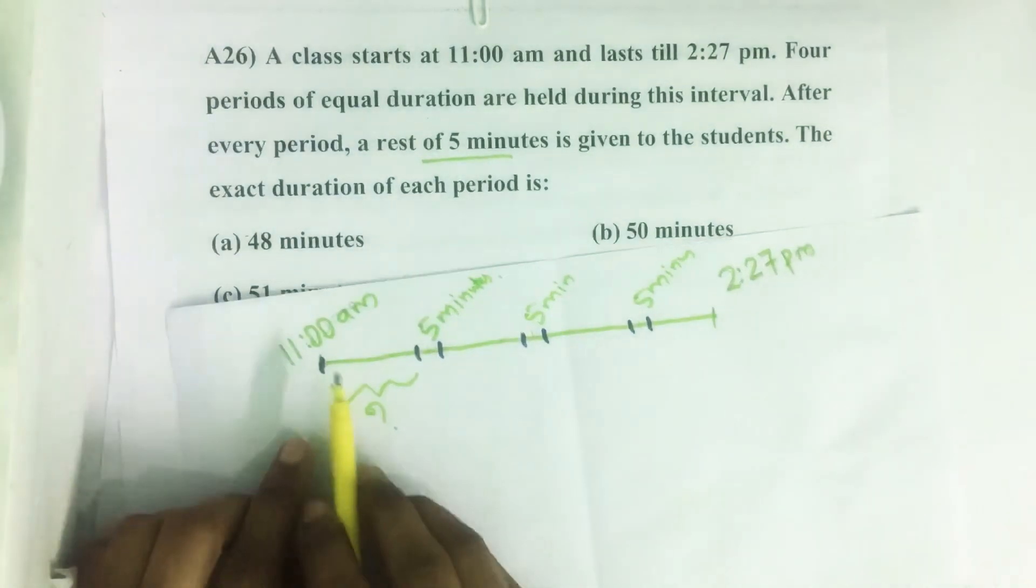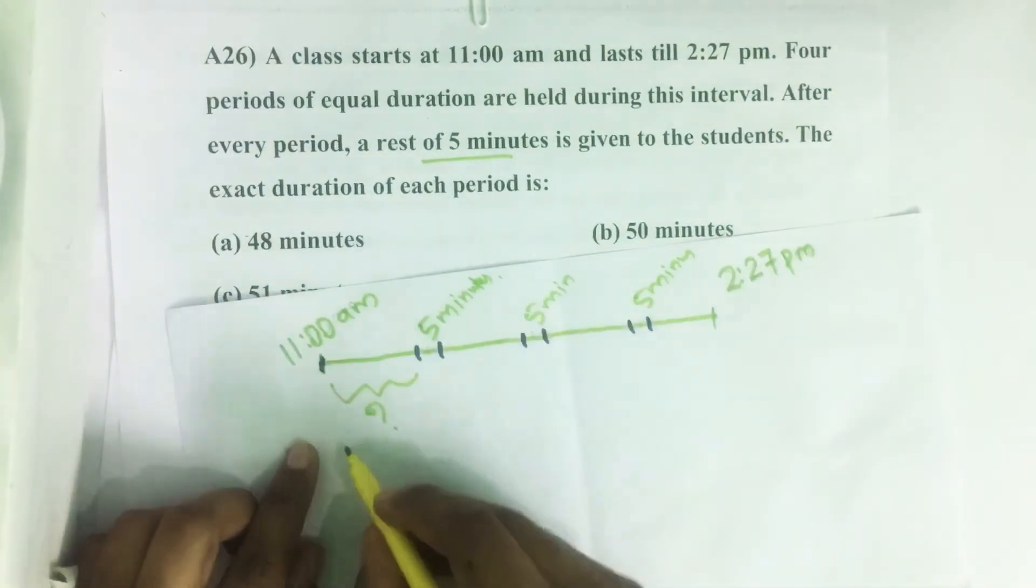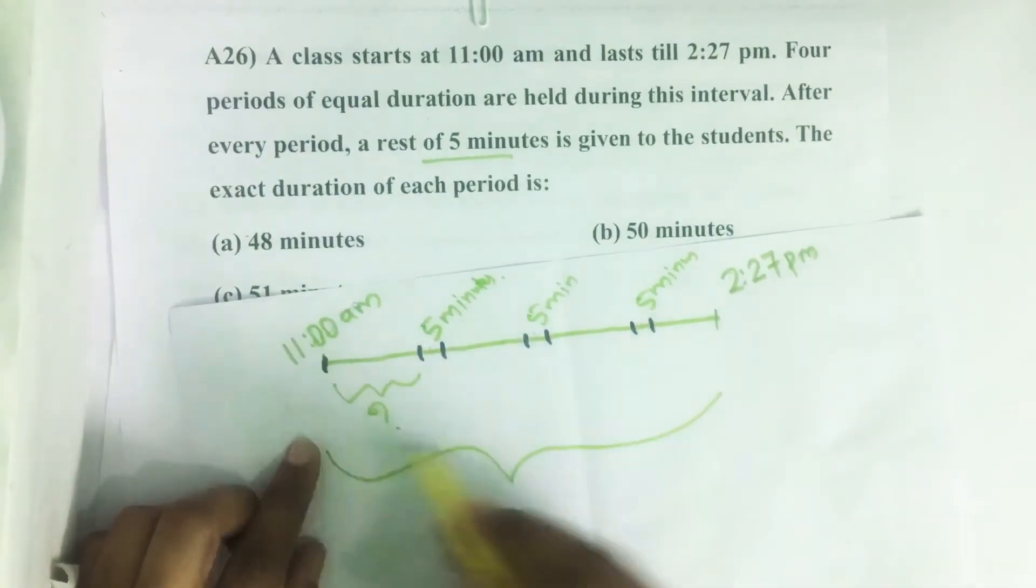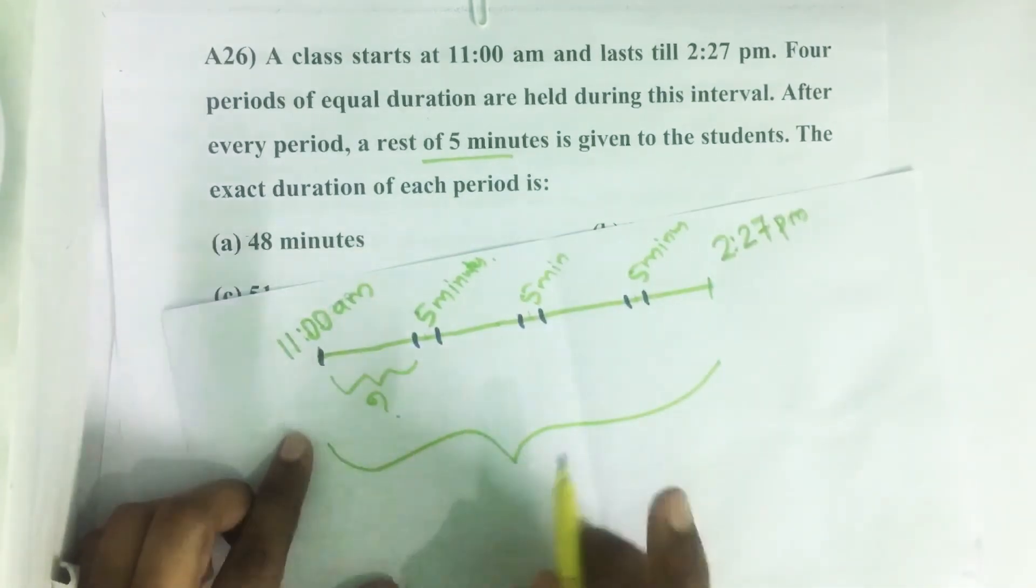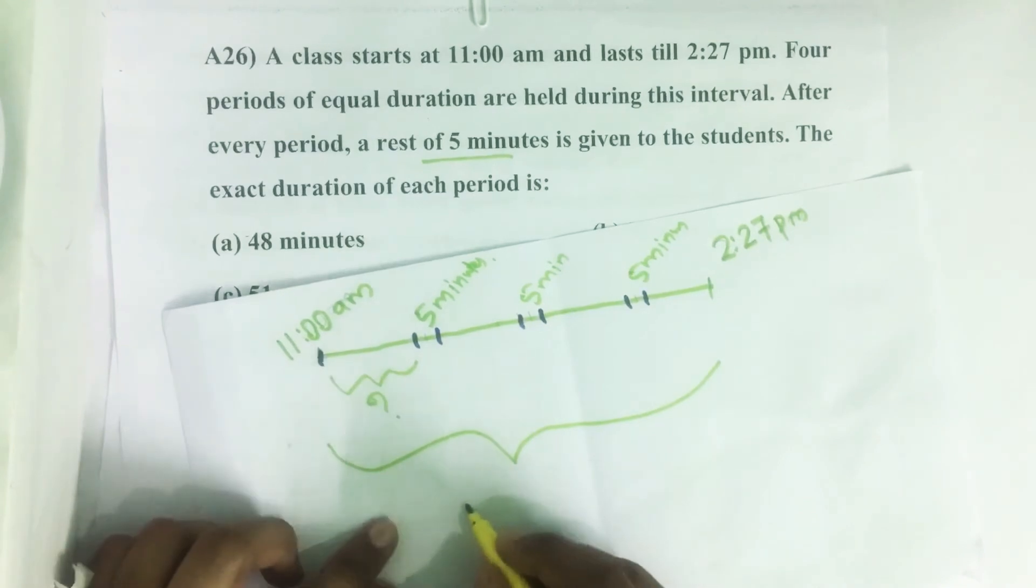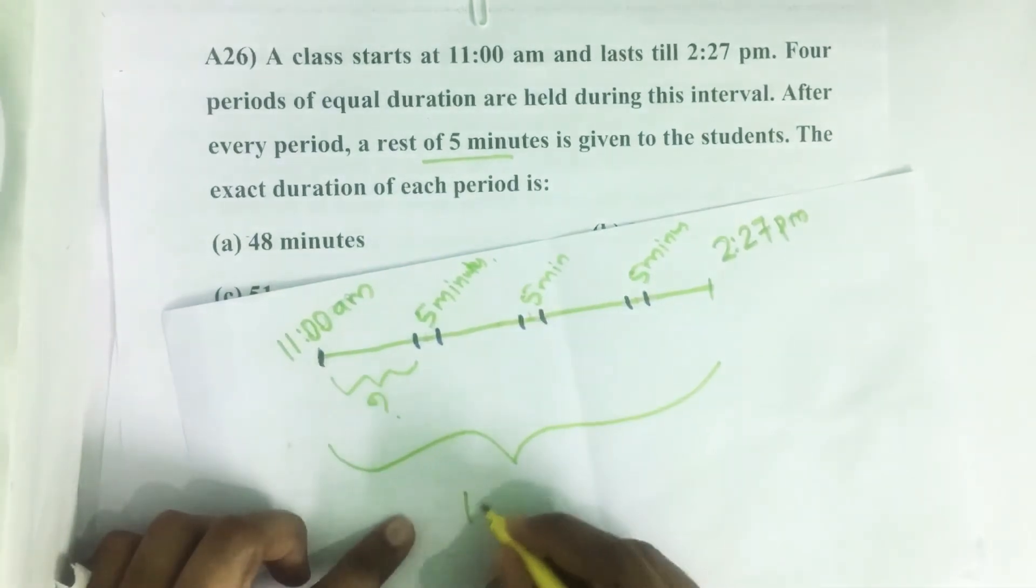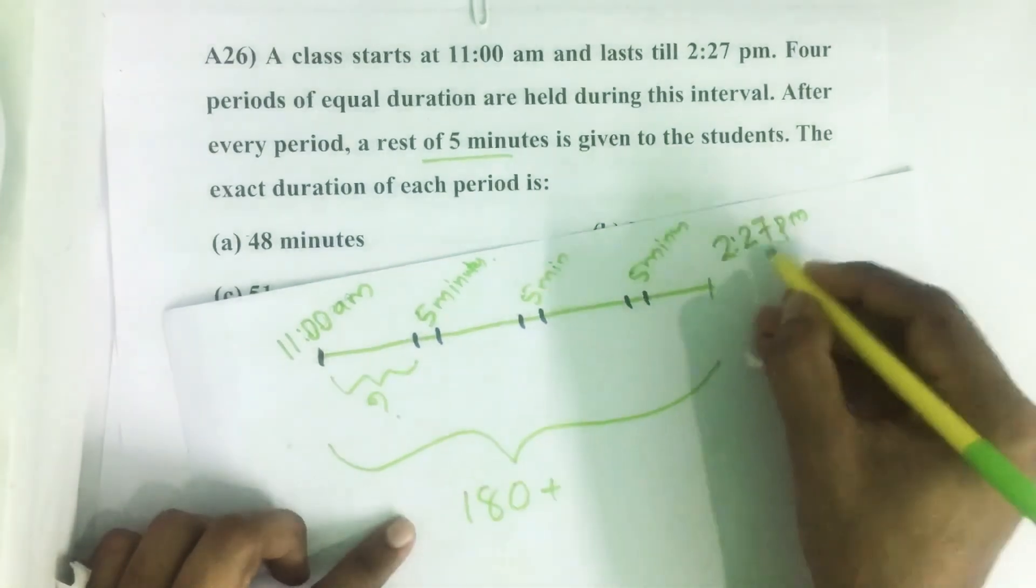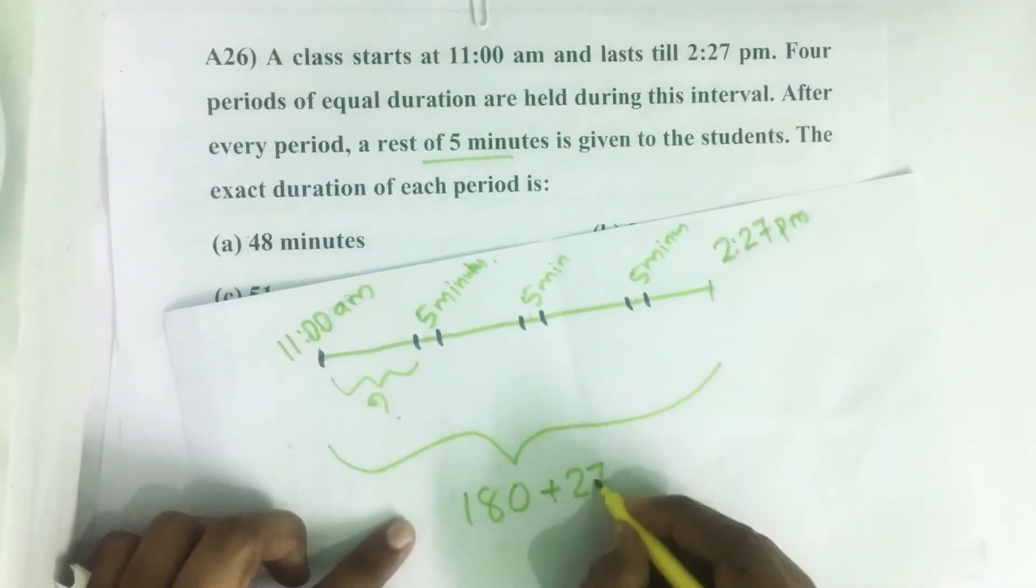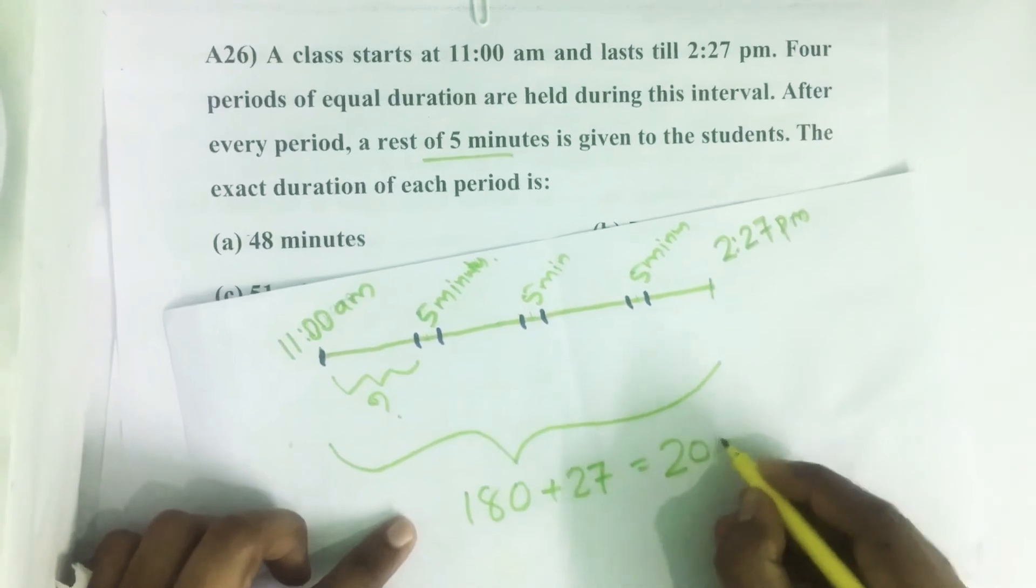So from 11 a.m. to 2:27 p.m., it is 11 to 12, then 12 to 1, 1 to 2, 2 to 2:27. That means 3 hours and 27 minutes. 3 hours is 180 minutes plus 27, so total 207 minutes.